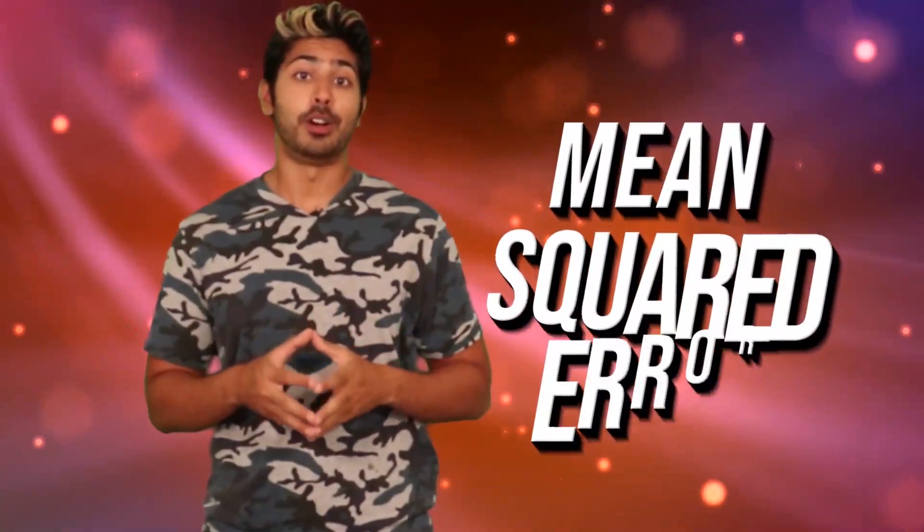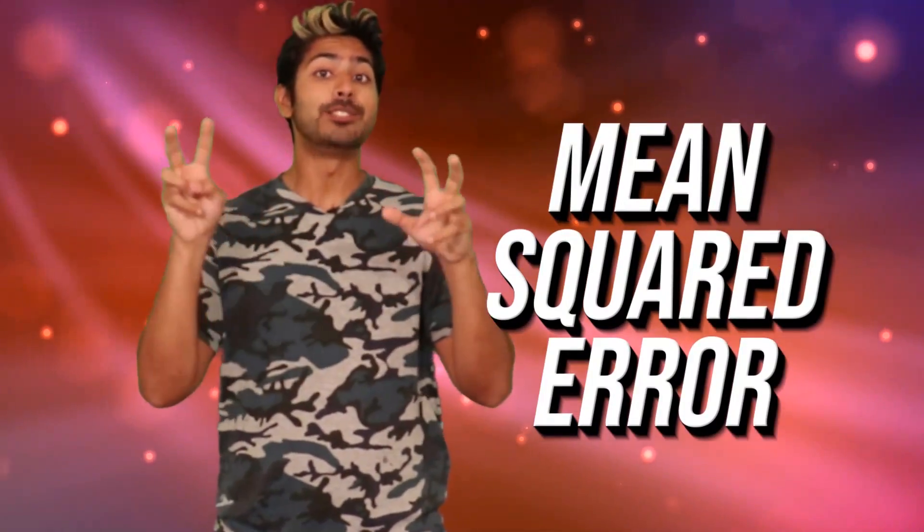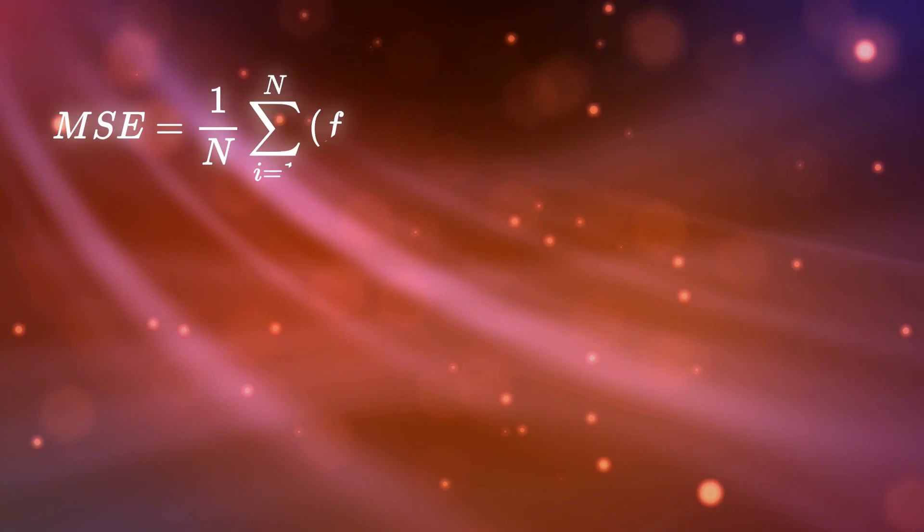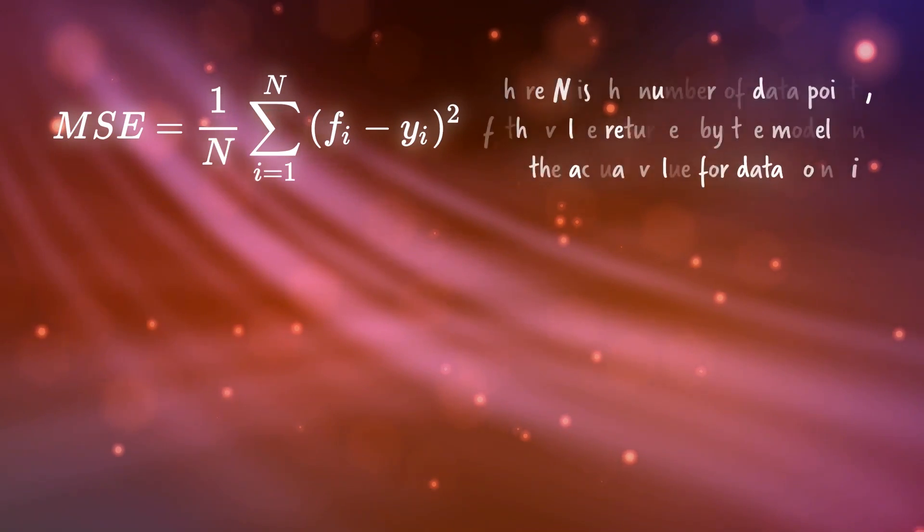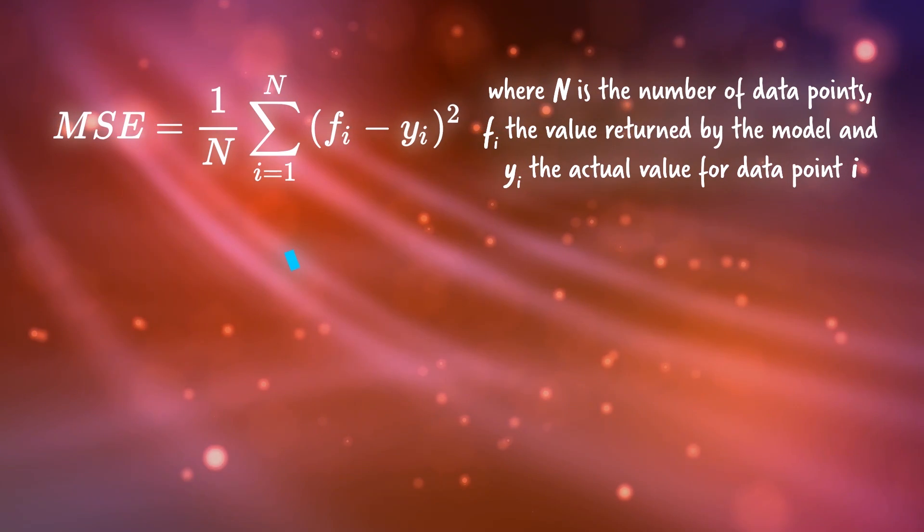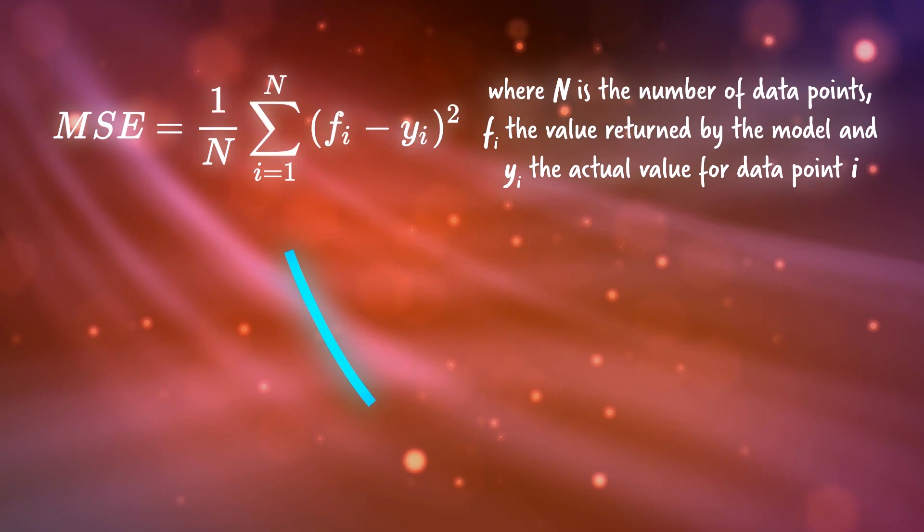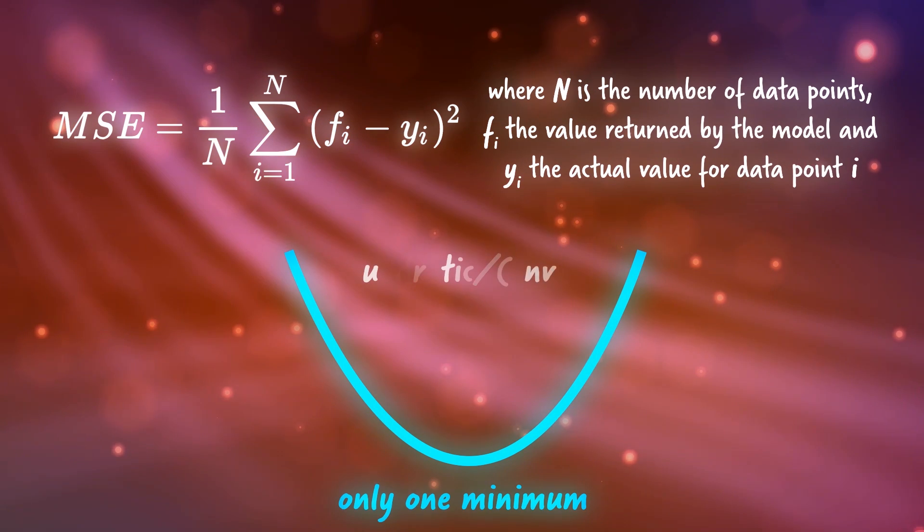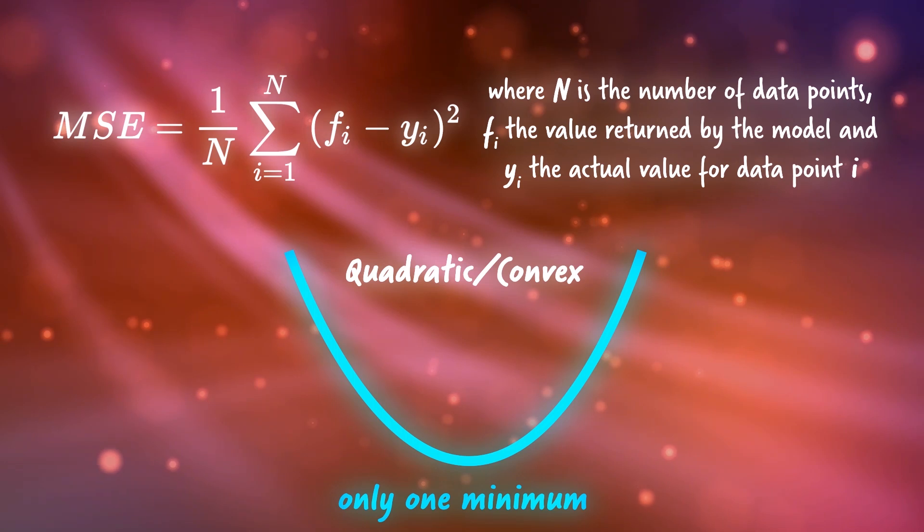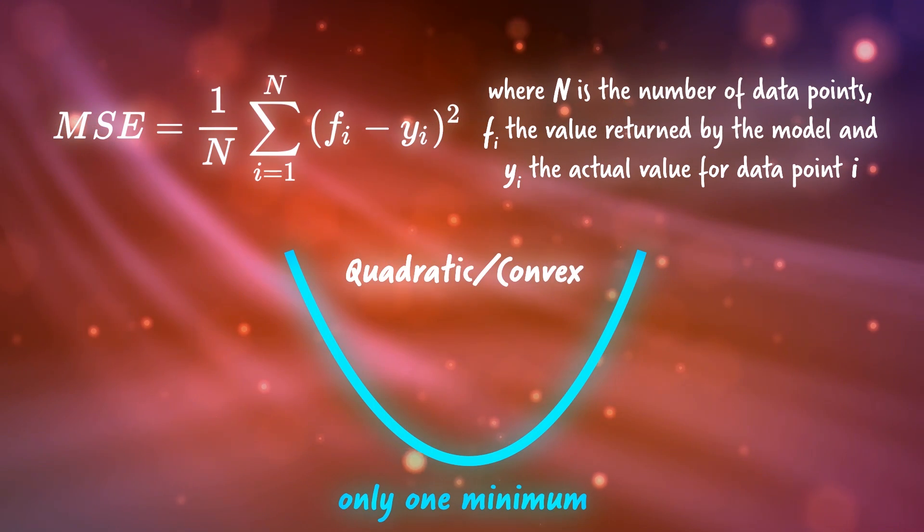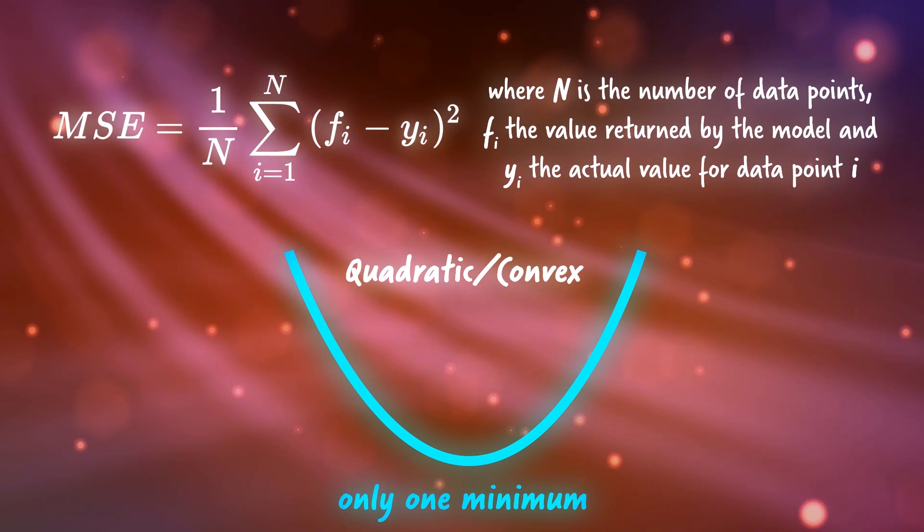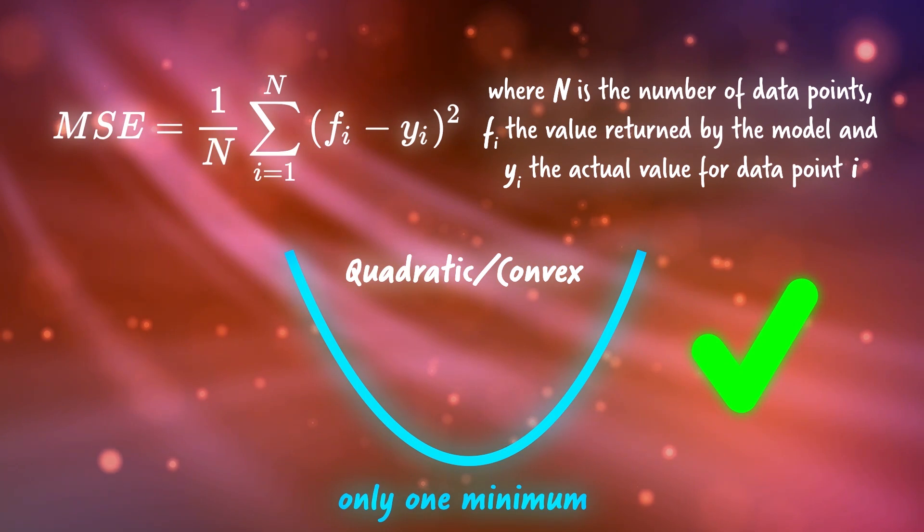A popular loss function for regression is to use the mean squared error, also called the L2 loss. This measures the average amount that the model's predictions vary from the correct values, so we can think of it as a measure of the model's performance on the training set. We calculate the difference between the predicted output and the actual output, square it, do that for every data point, add them all up, then divide by the total number of them.